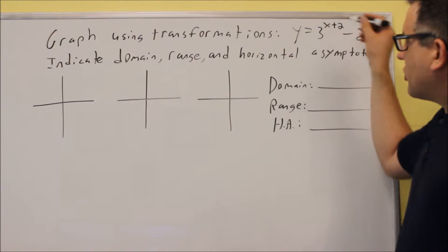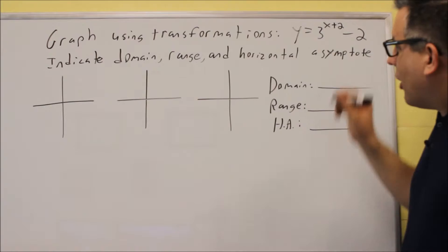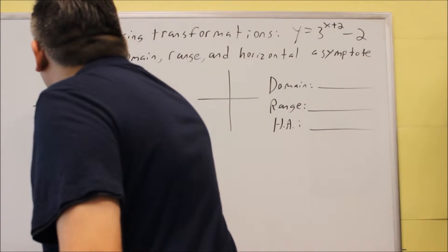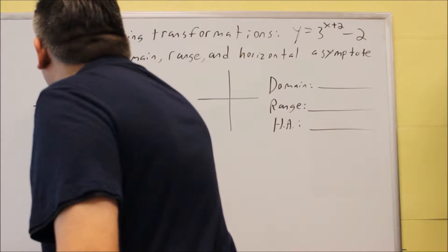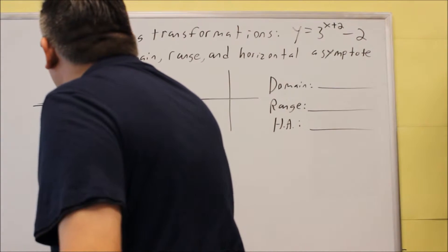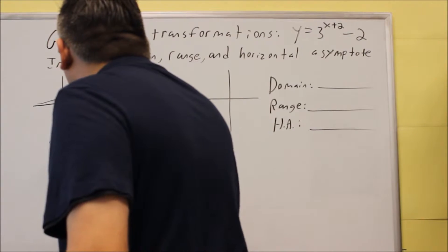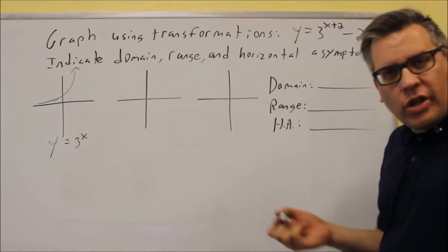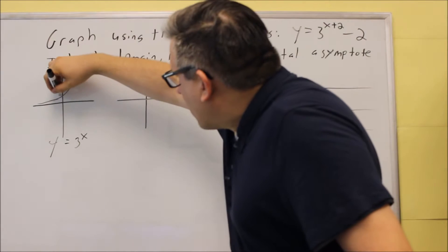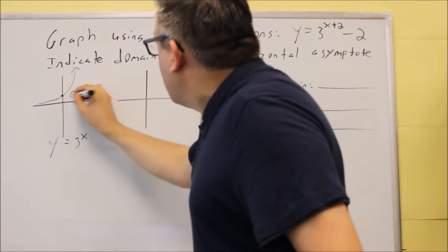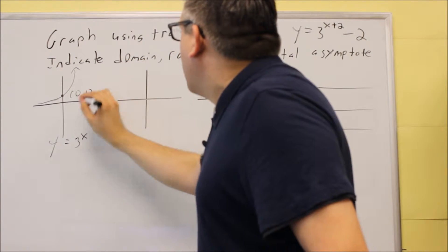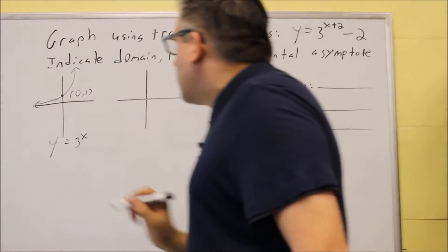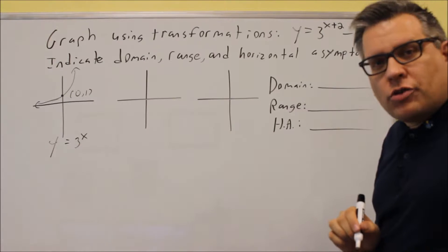So first, we want to start with the base graph. Now the graph of 3 to the x is a little bit steeper than 2 to the x, so we're just talking about sketches here. So we're going to start with y equals 3 to the x. It does look similar to the y equals 2 to the x graph. It goes through our common point right here, and it's going to go through 0, 1. So that's what we start, we always want to start with our base graph when we do transformations.